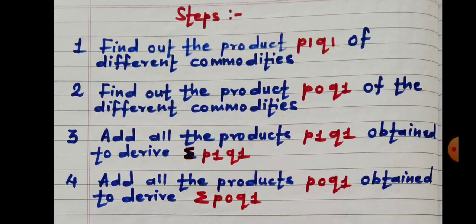Let us see various steps in the construction of Paasche's index number. Number 1: find out the product P1Q1 of different commodities, i.e. P1 multiplied by Q1. Number 2: find out the product P0Q1 of the different commodities, i.e. P0 multiplied by Q1. Number 3: add all the products P1Q1 to derive Sigma P1Q1 — summation of all P1Q1. Number 4: add all the products P0Q1 to derive Sigma P0Q1 — summation of all P0Q1.